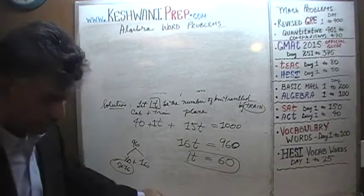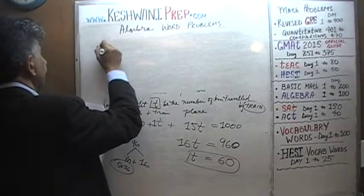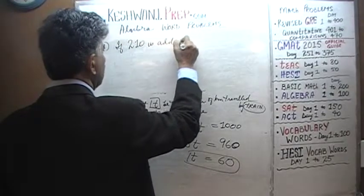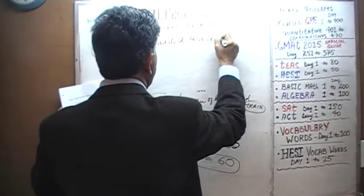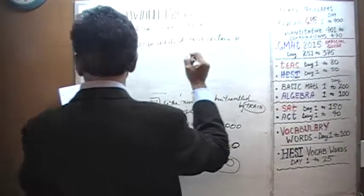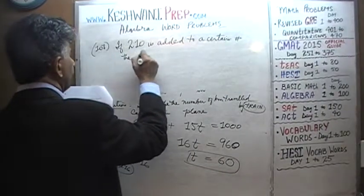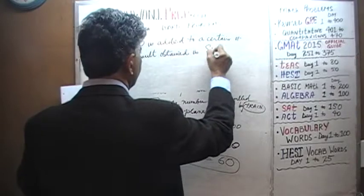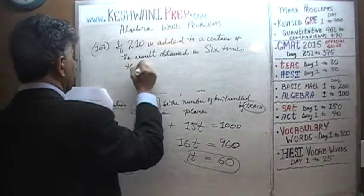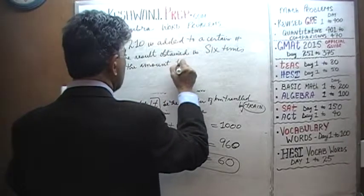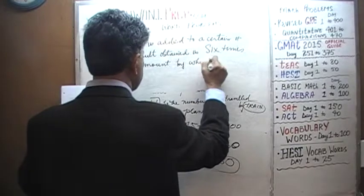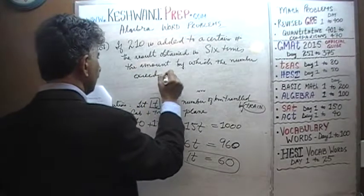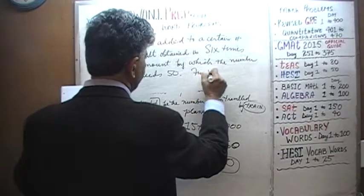Now this is problem 108. We are told that if 210 is added to a certain number, the result obtained is 6 times the amount by which the number exceeds 50. Find it.